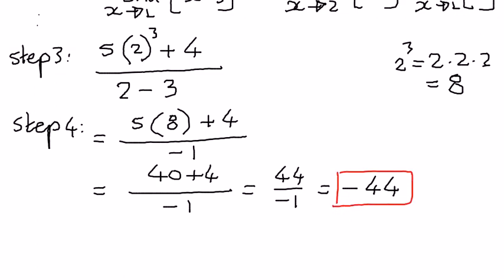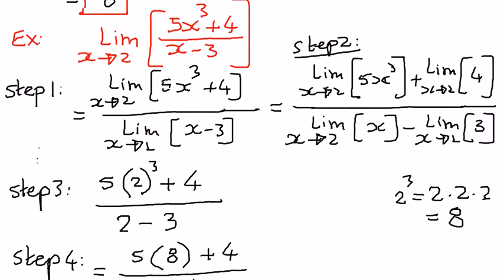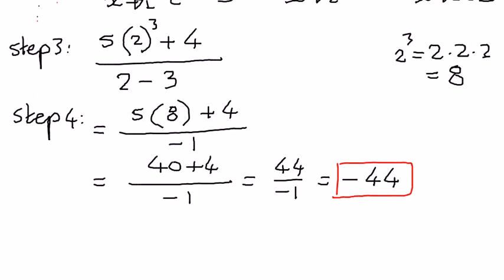So therefore, when we wanted to find the limit of this function, 5x³ + 4 divided by x - 3 as x approaches 2, the value of that limit is going to be equal to negative 44.